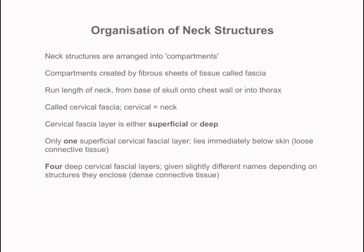Very similarly to in the upper limb and the lower limb, the structures running through the neck are compartmentalised by a series of concentrically arranged fibrous sheets of tissue called fascia. These fibrous sheets of tissue, for the most part, run the length of the neck from the base of the skull, either down onto the chest wall or even into the thorax. Because this fascia is within the neck, it's called cervical fascia. There are a number of layers, although we can broadly categorise them as either being superficial cervical fascia or deep cervical fascia.